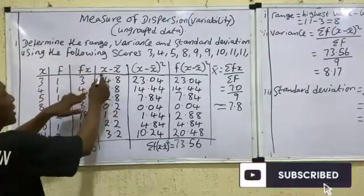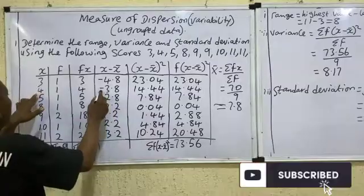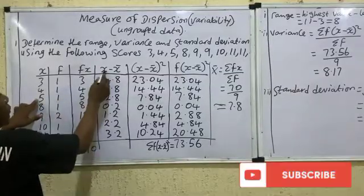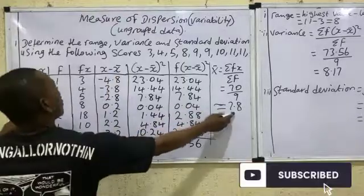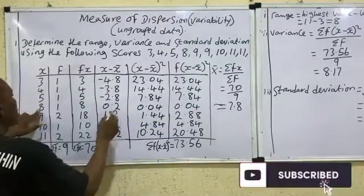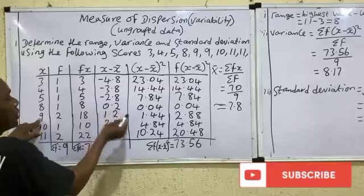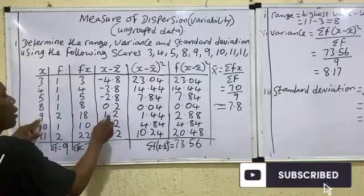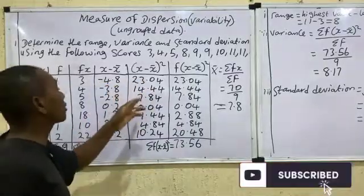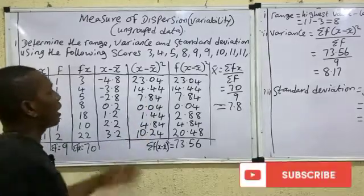Now compute x minus x-bar for each value. x=3: 3 minus 7.8 = −4.8. x=4: 4 minus 7.8 = −3.8. x=5: 5 minus 7.8 = −2.8. x=8: 8 minus 7.8 = 0.2. x=9: 9 minus 7.8 = 1.2. Continue down the table. After that, square each of these deviation values — remember, squaring any negative value gives a positive result.